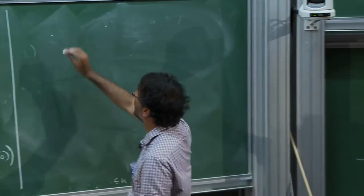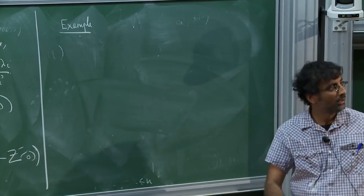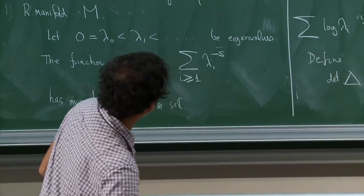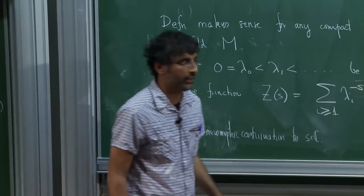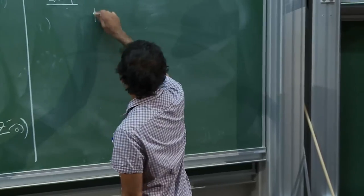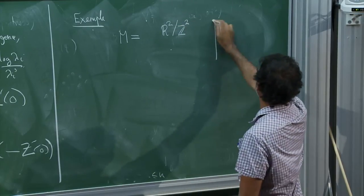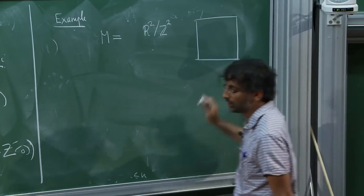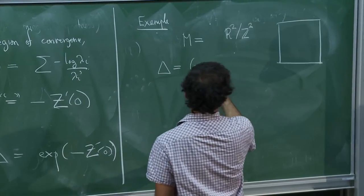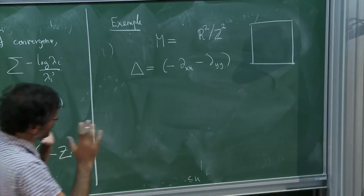We define the determinant of the Laplacian to be exp(−Z'(0)). That's the definition, and it works for any compact Riemannian manifold. Let me do one example to give you a flavor.